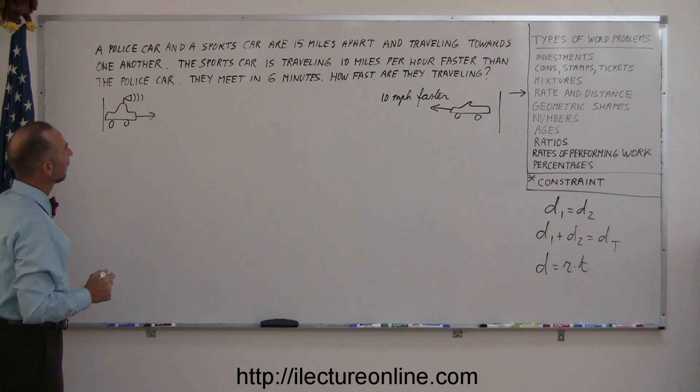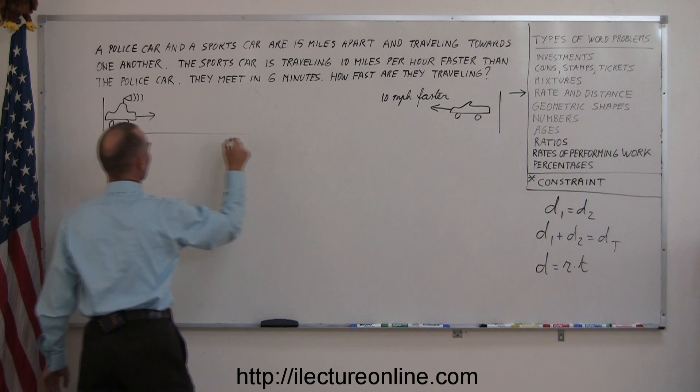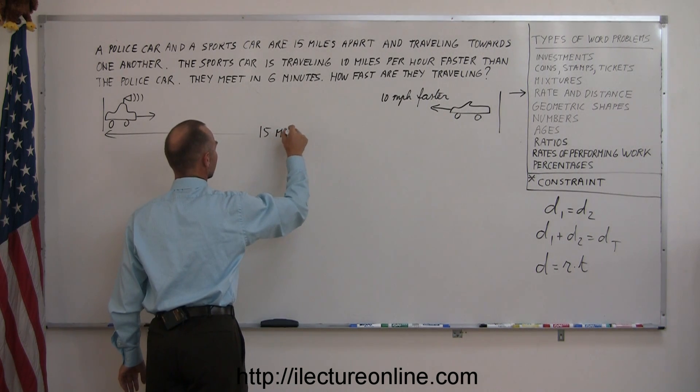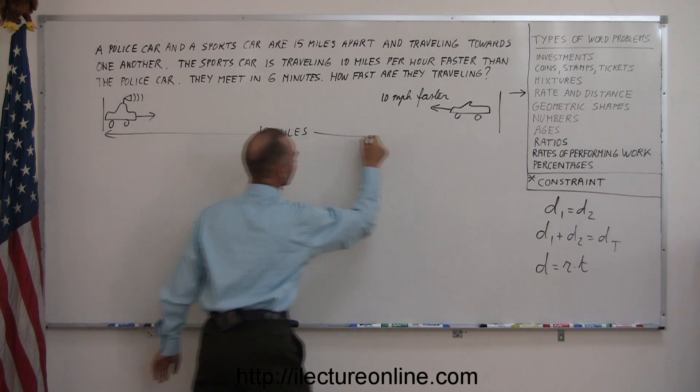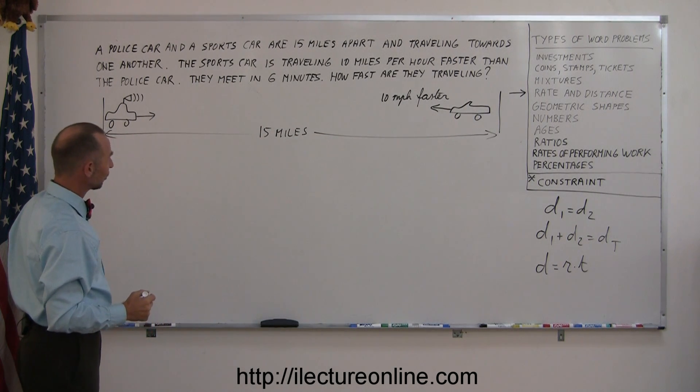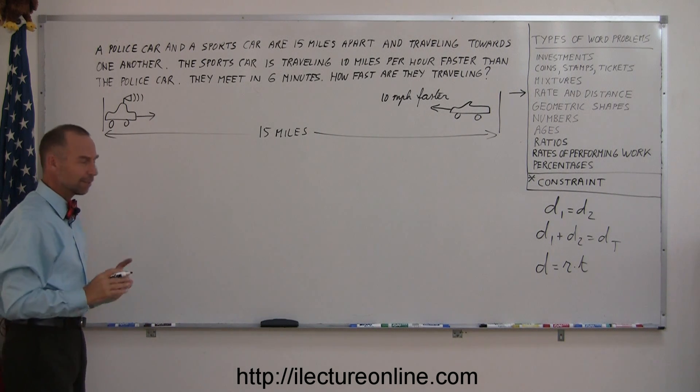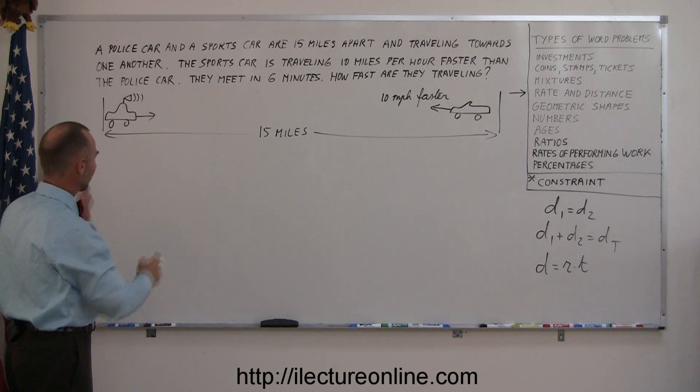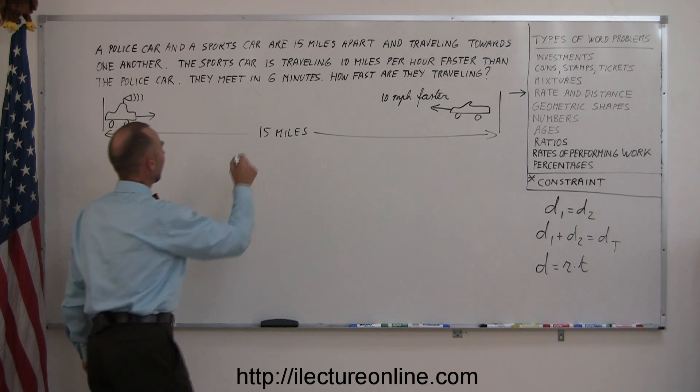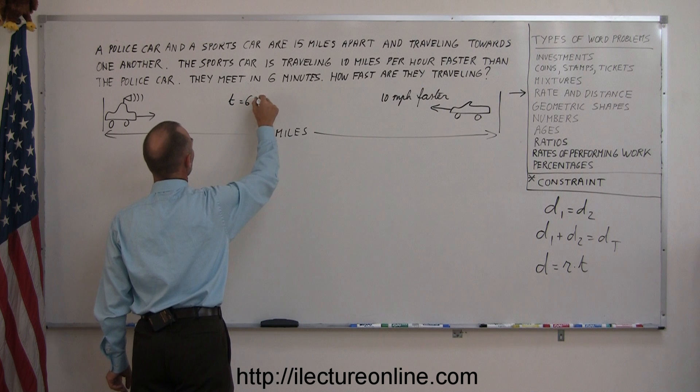Okay. They are 15 miles apart. So the whole distance between the two is 15 miles. And the total time that they both travel before they meet, and of course, they're not going to meet in the middle because the sports car is faster than the police car, so they meet at some point, and six minutes have elapsed. So time equals six minutes.